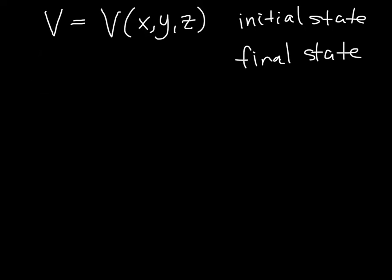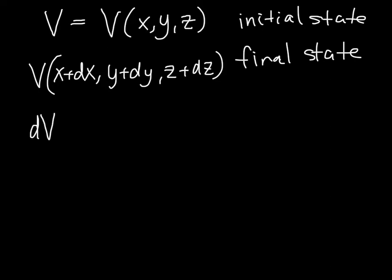And the system has moved basically an infinitesimal distance to now be at V of x plus dx. So we've moved a little bit in x, a little bit in y, and a little bit in z. And if we want to know the change in V that results dV from this change, then this is simply the difference in these two values.